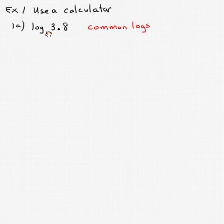Normally when there's not a base written, we're referring to what's called common logs, which means logs base 10, because we have a base 10 number system. Just like when you write x, you really mean 1x to the first power. If you see log and there's no base written, we mean it's base 10.